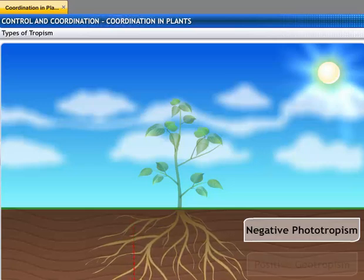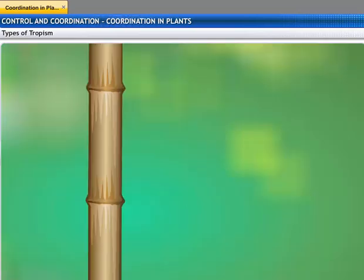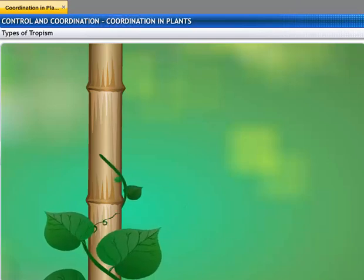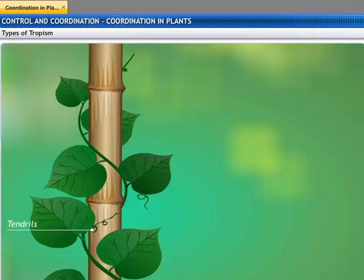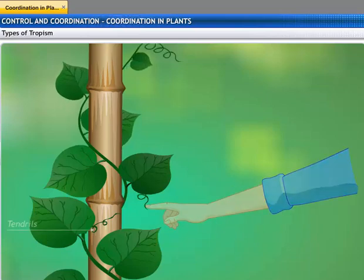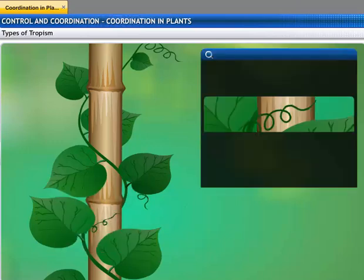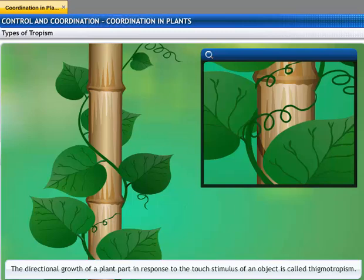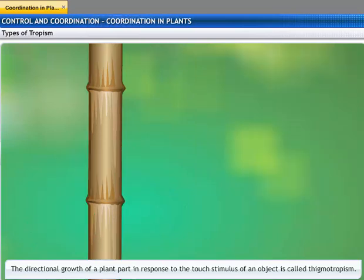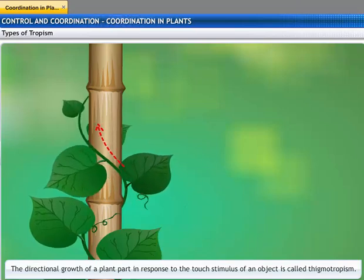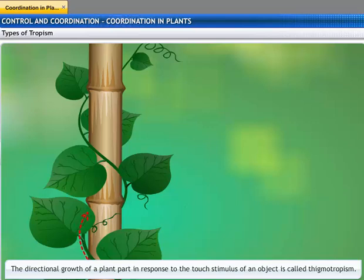The pea plant climbs up other plants or fences by means of tendrils which are sensitive to touch. When the plant comes in contact with any support, it entwines itself around the object and clings to it. This is an example of thigmotropism. So we see that plants respond to stimuli slowly by growing in a particular direction — and as this growth is directional, it appears as if the plant is moving.